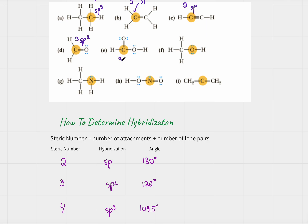This carbon is attached to one, two, three atoms and has no lone pairs, so hybridization must be sp2. This oxygen is attached to two atoms and it has one, two lone pairs, so steric number is four and hybridization must be sp3.